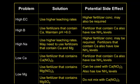For high boron, the recommendation is typically to use fertilizers that contain calcium and maintain your pH above 6. However, fertilizers that contain calcium have relatively low ammoniacal nitrogen, so if high boron coincides with high alkalinity, you can have problems unless you acidify. For high sodium, use higher leaching rates and fertilizers containing calcium and magnesium. For low calcium, use fertilizers that contain calcium — but again, those fertilizers don't have a lot of ammoniacal nitrogen, so if alkalinity is high, you may need to acidify.